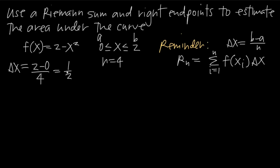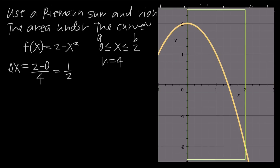Delta x is the width of each rectangle, and n is the number of rectangles. So we're going to use 4 rectangles, each with a width of 1 half, to estimate the area under the curve. Dividing the interval from 0 to 2 into 4 subintervals — first in half, then in half again — gives us subintervals 1, 2, 3, and 4.